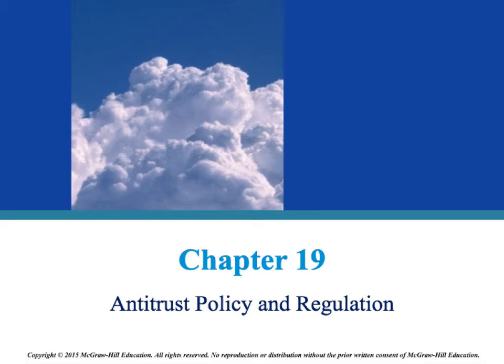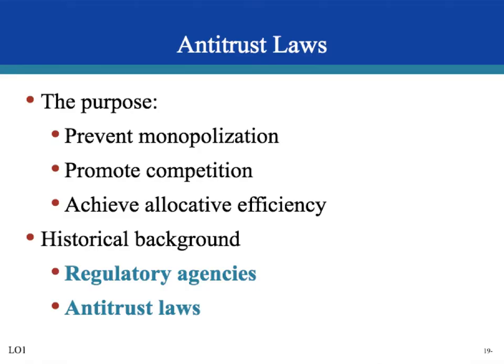Chapter 19: Antitrust Policy and Regulation. The purpose of antitrust laws is to prevent monopolies from forming, because once a monopoly forms, there is less competition and it could create inefficiency in the allocation of resources. This helps prevent monopolies from forming in certain industries, which benefits the consumer, because the more companies there are in an industry, the higher the competition, the lower the prices, and the more choices the consumer has.